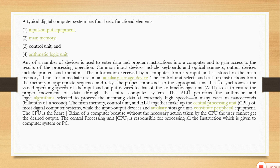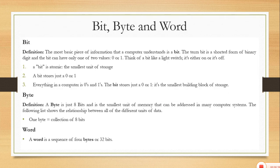After completing the architecture of the digital computer, let's move on to bit, byte, and word. A bit by definition is the most basic piece of information that a computer understands — it is the shortest form of binary digit. It comprises of either 0 or 1.